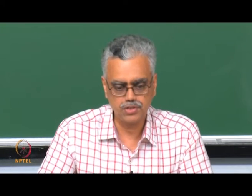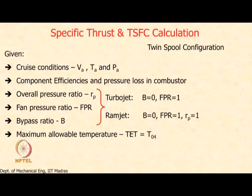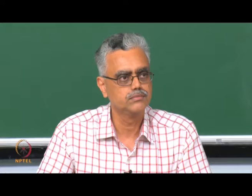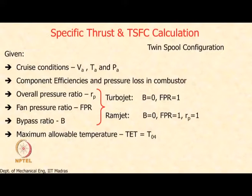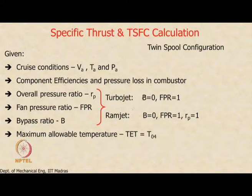The calculation procedure is general: setting bypass ratio to zero recovers the turbojet; additionally setting fan pressure ratio to 1 gives a turbojet; further setting compressor pressure ratio to 1 recovers the ramjet — since a ramjet has no compressor and no turbine. This procedure applies to turbojet, turbofan, ramjet, and afterburning turbojet engines.